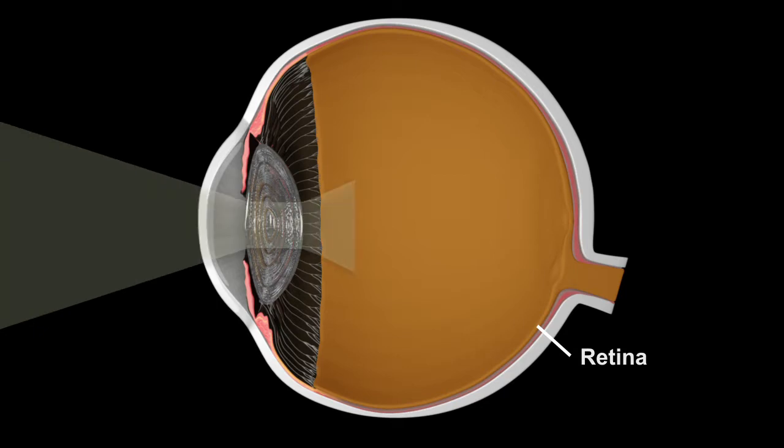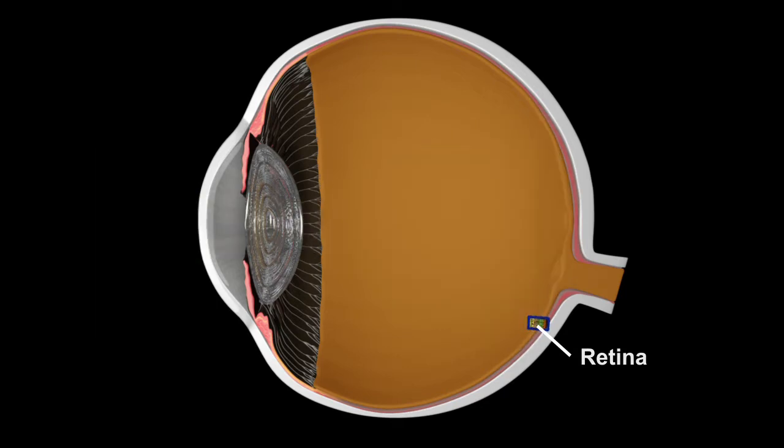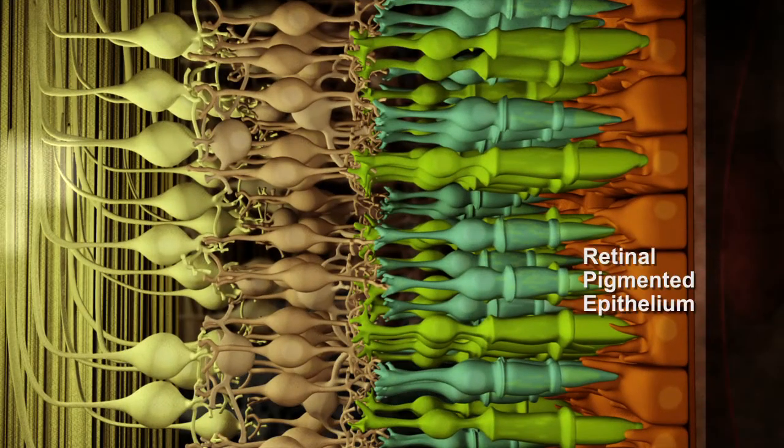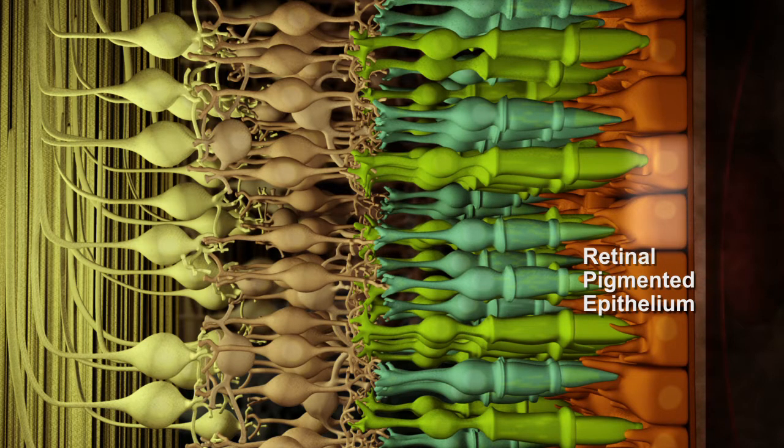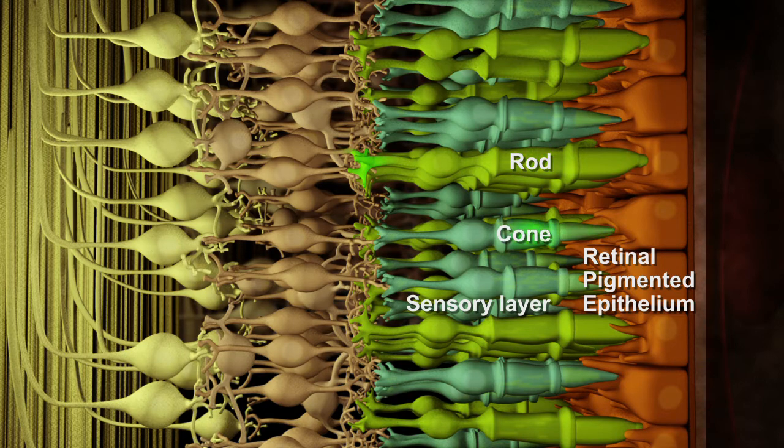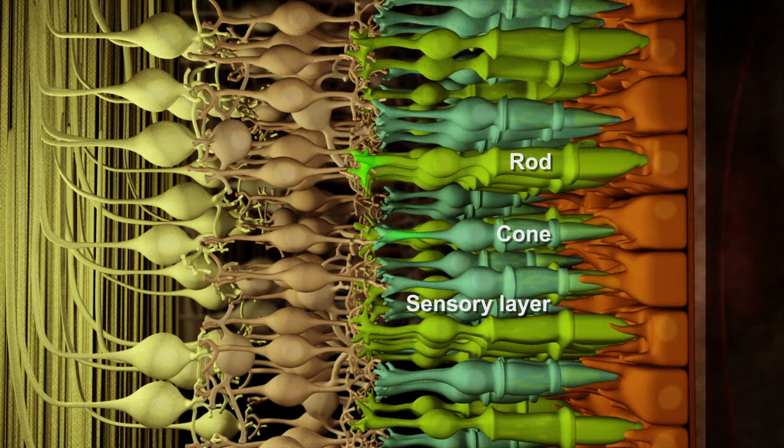The retina is responsible for receiving light information. Its pigmented layer helps to capture light. The retina's sensory layer has rod and cone photoreceptors that detect and translate light information into nerve impulses.